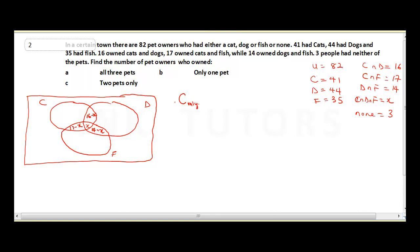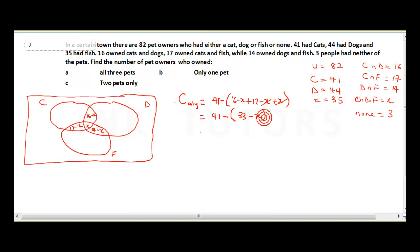To get cat only, we take 41 minus all other elements in the cat circle: (16 − X) + (17 − X) + X. That simplifies to 41 minus (33 − X), which gives us 41 minus 33 = 8, plus X. So cat only is 8 + X.